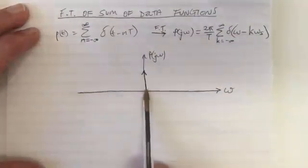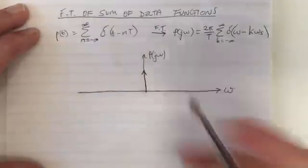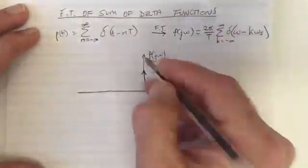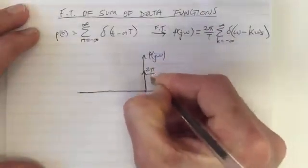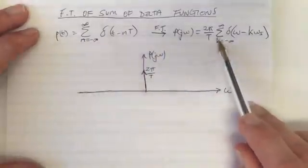It's zero, then it's the delta, then it's zero, and the height here is given by 2π divided by T. So that's the element k equals zero.